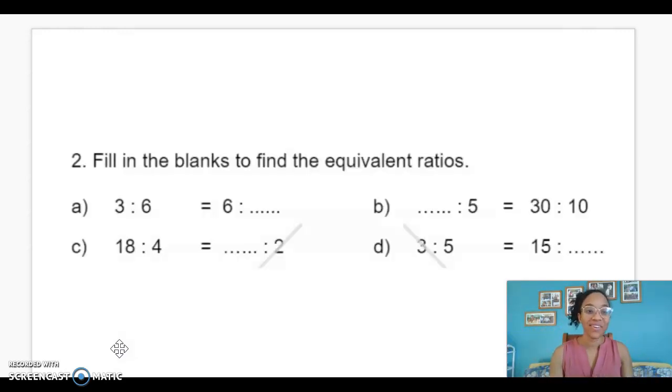Either way works. As long as you can find a consistent multiplication or division pattern to go from one ratio to another, you have a hint that those are equivalent ratios. Now, once again, we're looking to fill in those blanks to find the equivalent ratios. Remember that when we're missing one of the second ratios, a lot of times we might want to use multiplication if we're moving from a smaller number to a bigger number, just as we are in problem A.